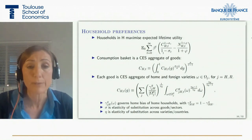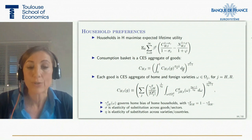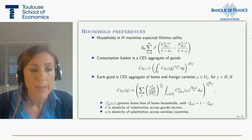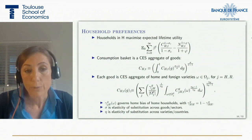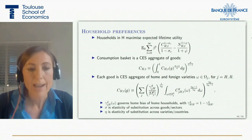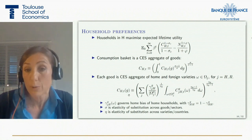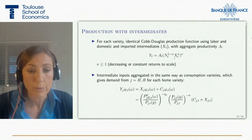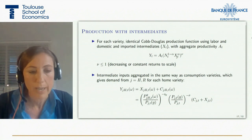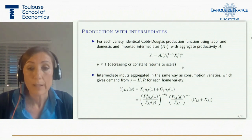Our maximizing households choose leisure and consumption over a bundle of goods given by C_g. Sigma is the elasticity of substitution across different goods or sectors G, and within each good category G, consumption consists of different varieties omega produced either at home or abroad. Each country produces a set of varieties of each good, and the elasticity of substitution across those varieties is given by EKG. Production combines workers and a composite of intermediate goods X, aggregated over the same varieties as in the consumption case. We close the model with a simple inflation targeting rule.